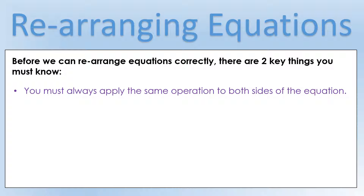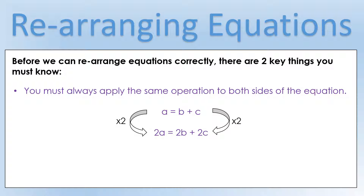Let's quickly talk about doing the same operation to both sides. Say we have the generic equation: quantity a equals quantity b plus quantity c. If we apply the operation 'multiply by two', we have to do the same thing to both sides. We get 2a on the left, equals 2b plus 2c on the right.